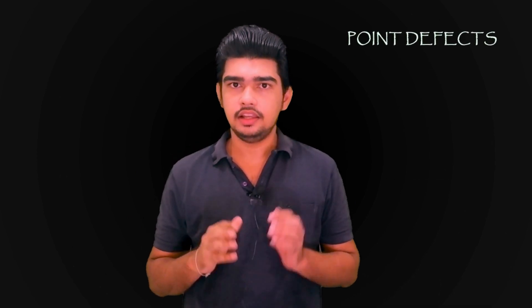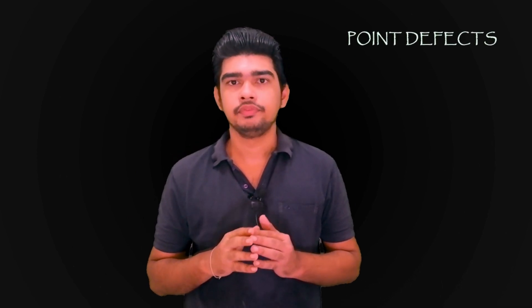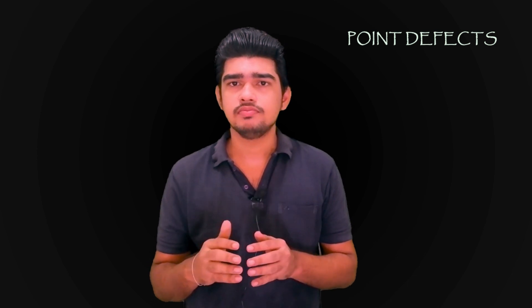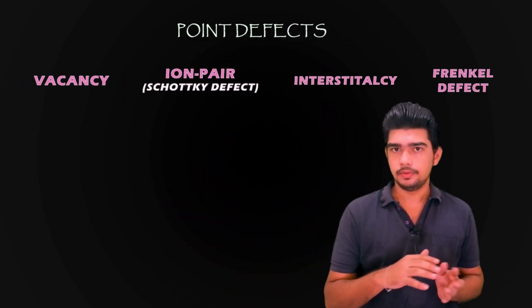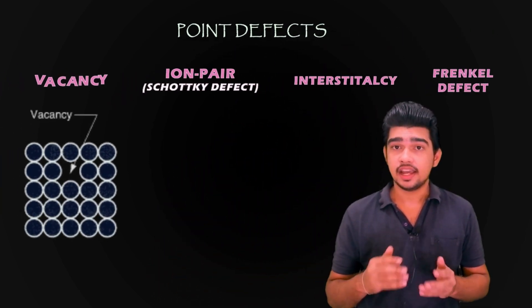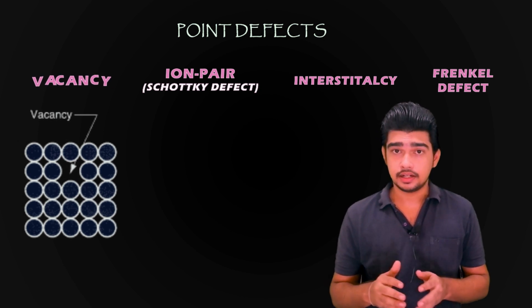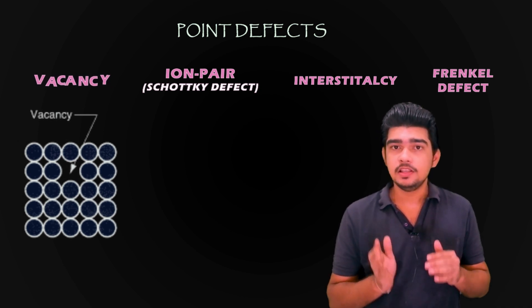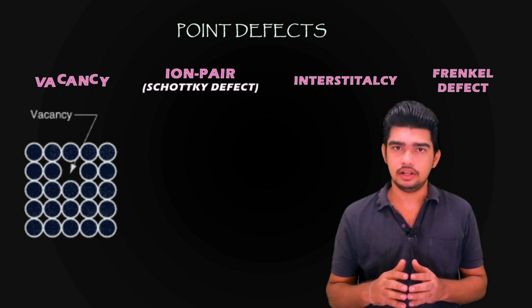Point defects are imperfections in the crystal structure involving either a single atom or a few atoms. The defects can take various forms. Vacancy is the simplest defect involving a missing atom within the lattice structure. You can see an atom is missing from its position in the diagram.